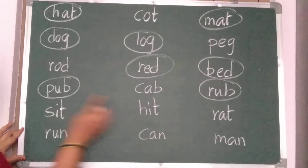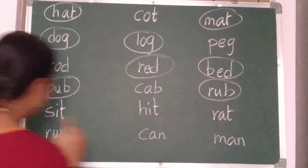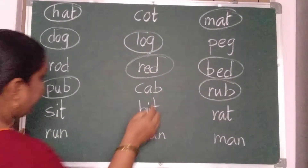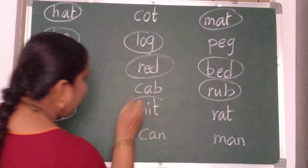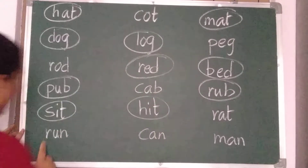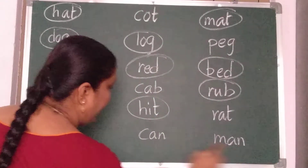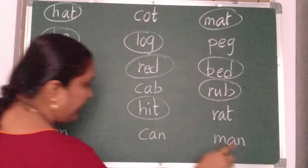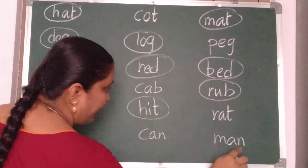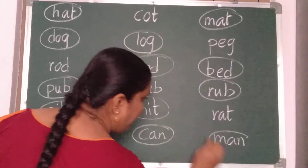Sit, hit, rat. Sit and hit — I, T and I, T. Run, can, man. Can and man — A, N and A, N. Same. Can and man.